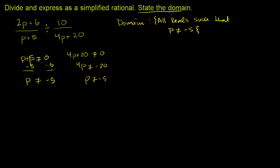Now let's actually simplify this expression. So when you divide by a fraction or a rational expression, that's the same thing as multiplying by the inverse. So let me just rewrite this thing over here. So 2p plus 6 over p plus 5 divided by 10 over 4p plus 20 is the same thing as multiplying by the reciprocal here.